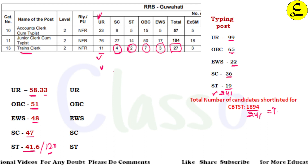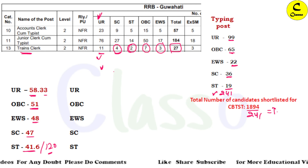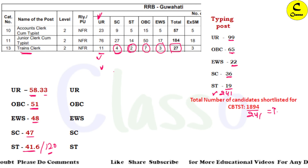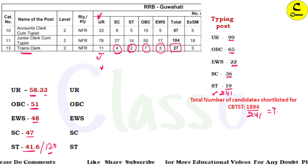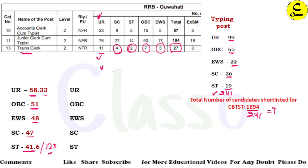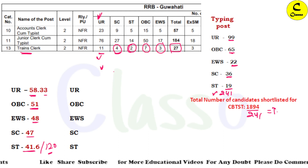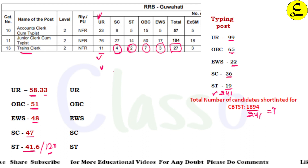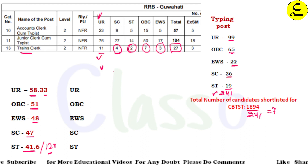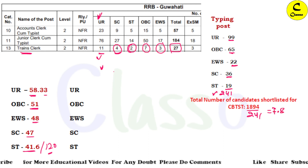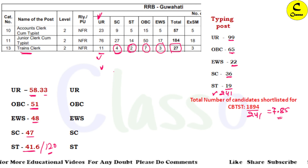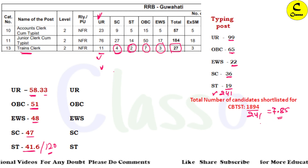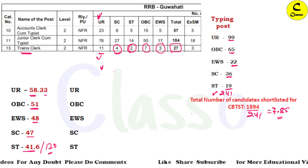The total candidates called is 1894, divided by 241 posts, which comes to approximately 7.85 times. So about 7.85 times the required number of candidates were called for the typing post.